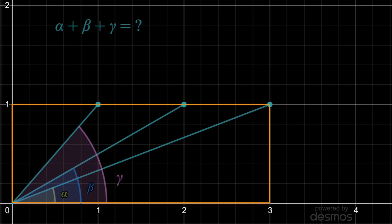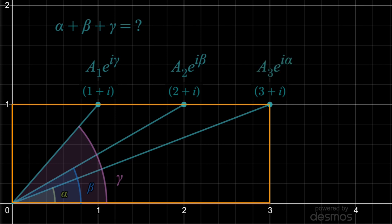This can be solved multiple ways — knowledge of trig identities can get you the answer, for example — but it's really simple with complex numbers. Because if we consider this a complex plane, the first point would be 1 plus i, the second 2 plus i, and the third 3 plus i. But these can also be written with Euler's formula, where the first would be some magnitude e to the i times gamma, the next would be another magnitude a2 e to the i times beta, and the last would be a3 e to the i alpha.